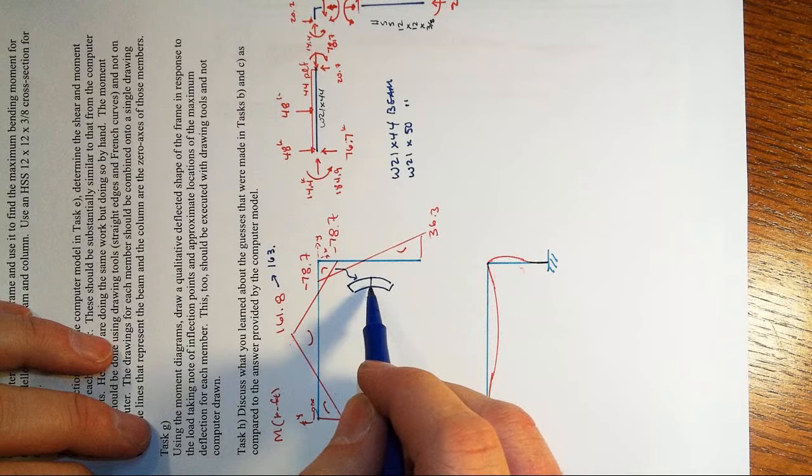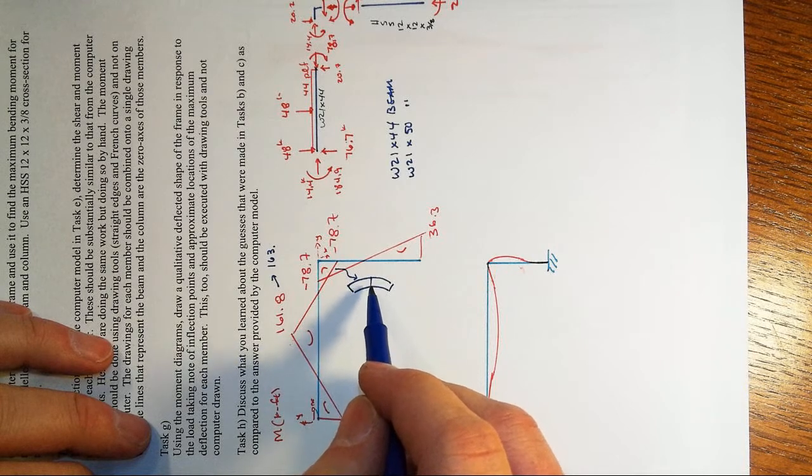And that compression side means for this instance hey it's bending like this concave down to us now and remember plain sections remain plain and hey this bottom is getting squeezed, the top is getting pulled apart, tension on the top, compression on the bottom,